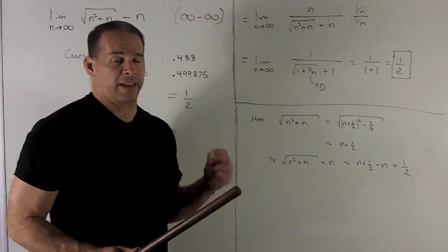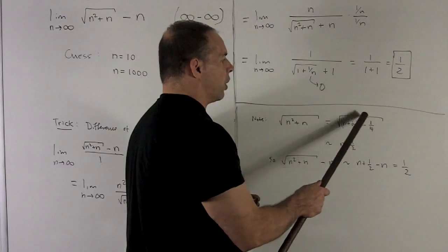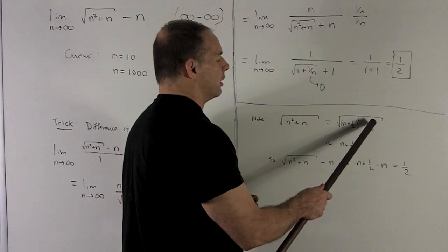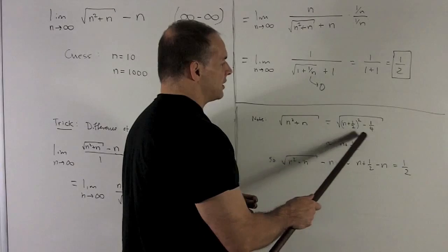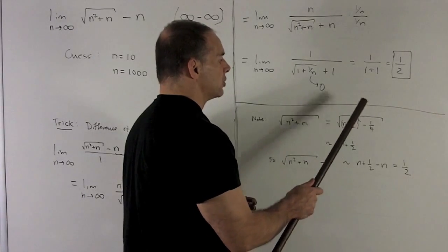Now, we're taking the limit as n goes to infinity. So if I put, say, a million in here, that 1 fourth is going to have no effect at all on my answer. So what happens then? This thing is pretty much going to look like the square root of n plus a half squared.